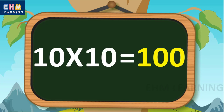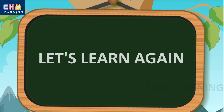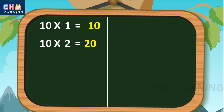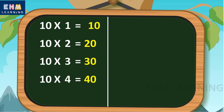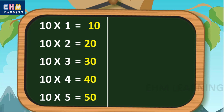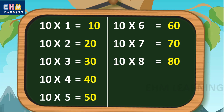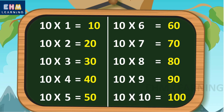Ten tens are one hundred. Let's learn again. Ten ones are ten, ten twos are twenty, ten threes are thirty, ten fours are forty, ten fives are fifty, ten sixes are sixty, ten sevens are seventy, ten eights are eighty, ten nines are ninety, ten tens are one hundred.